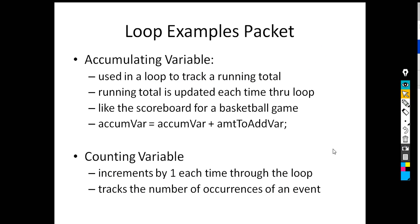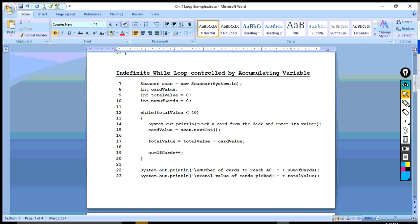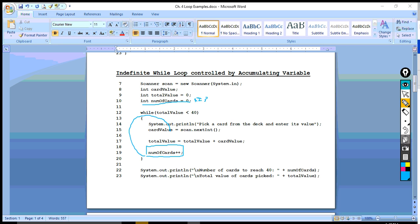Here is an example. You have number_of_cards, which starts at 0. The first time through the loop, the user is asked to pick a card, and because they picked a card we increment number_of_cards by 1 — so now they've picked one card. The next time through the loop they pick another card, and we increment again so now they've picked two cards. It's keeping track of the number of times an event occurs, and the event in this case is picking a card.